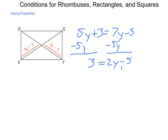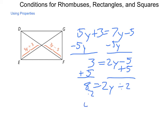The addition property of equality says we can add 5 to each side, which tells us that 8 = 2y. Then the division property of equality says we can divide both sides by 2, leaving us with y = 4. Substituting back in, 7(4) − 5 = 23, and 5(4) + 3 = 23 as well.